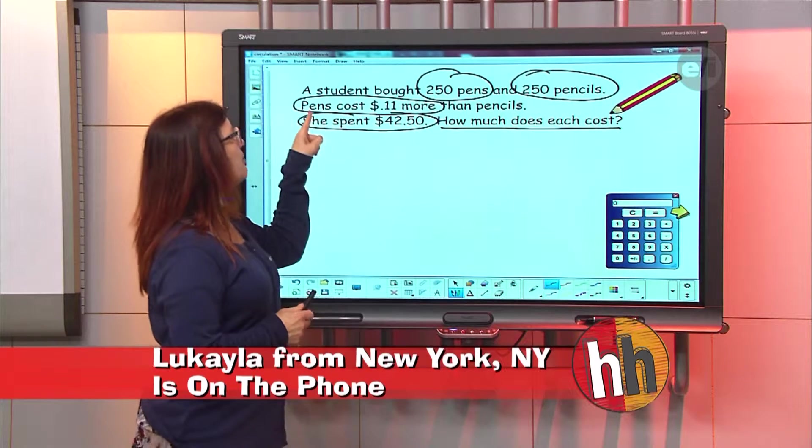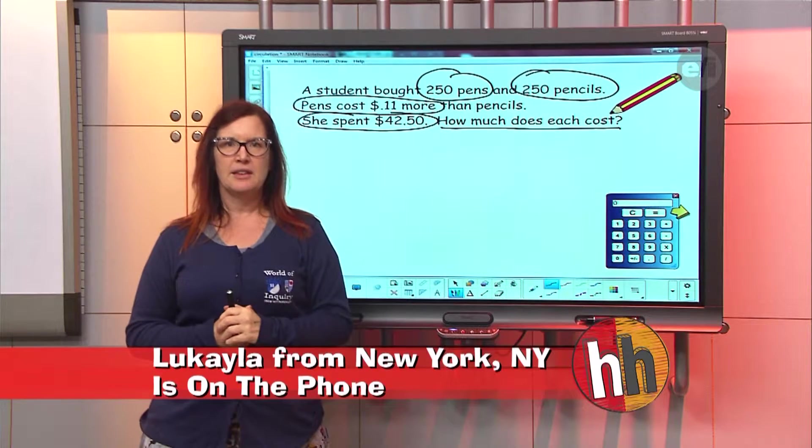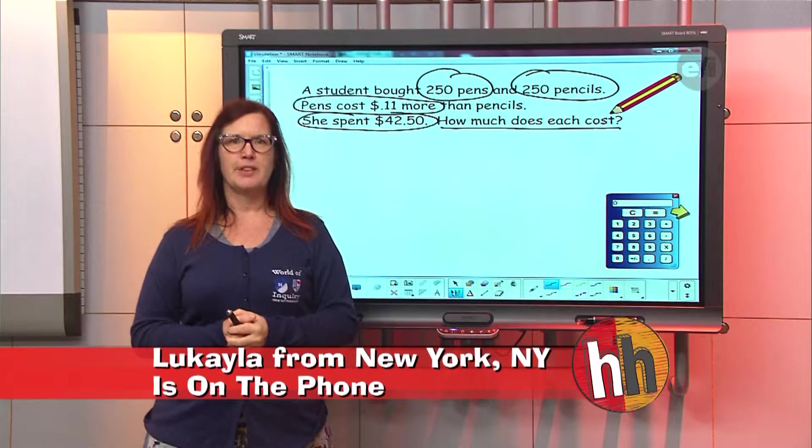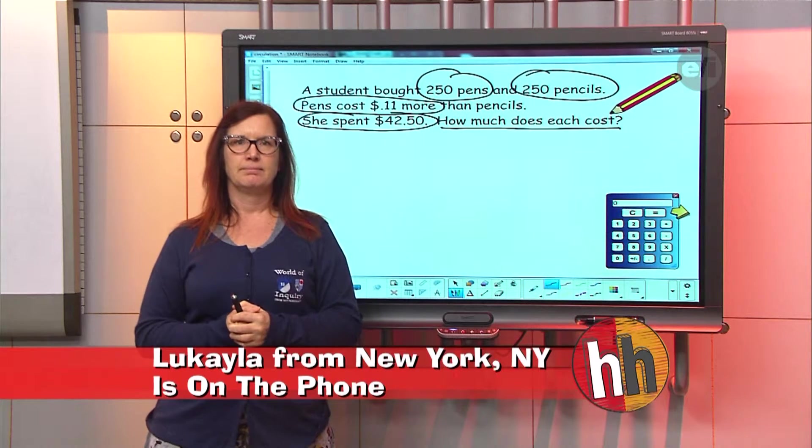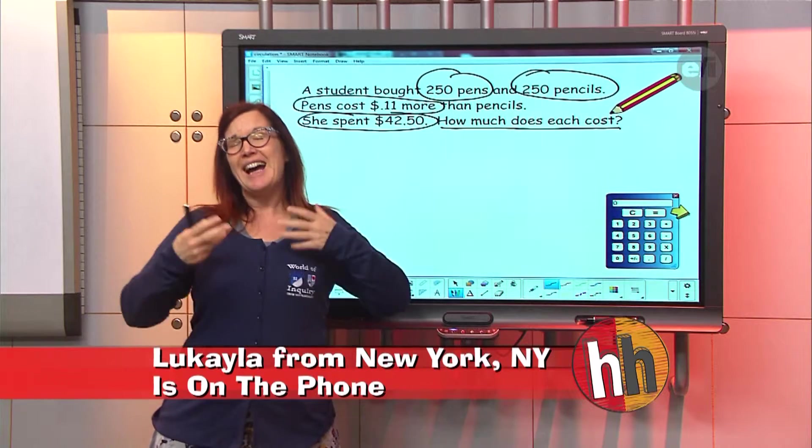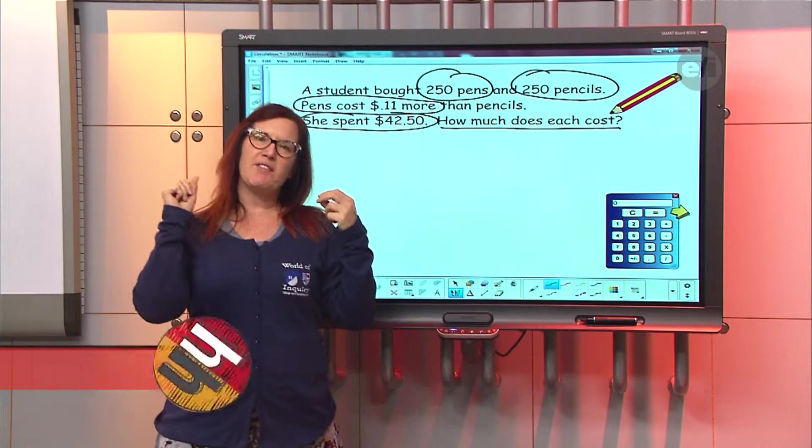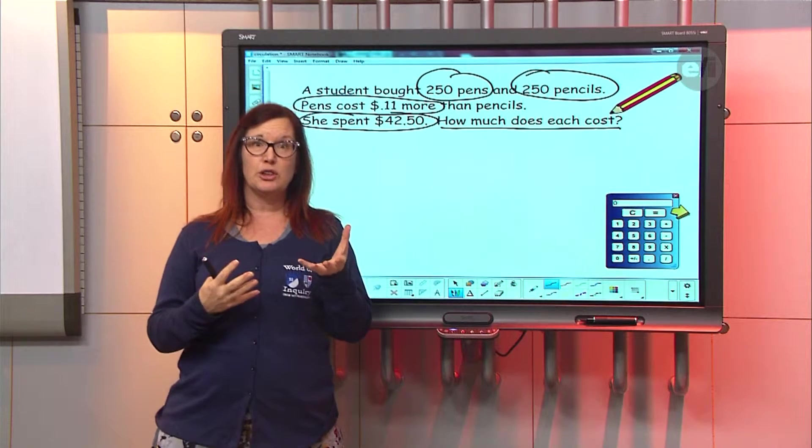Okay, so I see here that pens cost 11 cents more than pencils. Which one's cheaper, a pen or a pencil? Pencil. So what I like to do is I'm going to make my variable the one - if I know between the two prices that one's going to be cheaper, so I know that X is going to equal my pencil. So I'm defining my variable like you said.